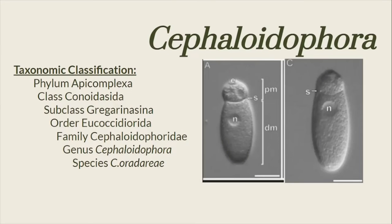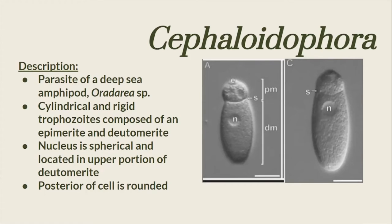This is an example species for the genus Cephaloidophora. Species from this genus are parasites of deep-sea amphipods or radaria. Trophozoites are cylindrical and rigid, and composed of an epimerite and deutomerite. The nucleus is spherical and located in the upper portion of the deutomerite.